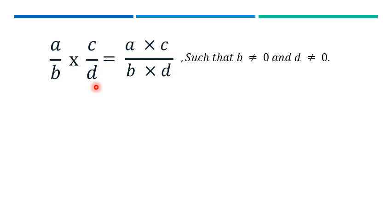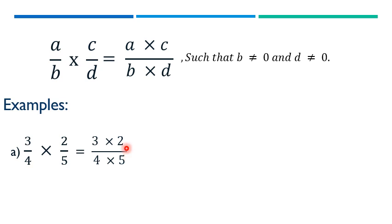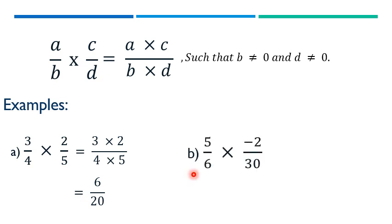This rule applies to products of three, four, or more fractions — we directly multiply all numerators together and all denominators together. Example: 3 over 4 times 2 over 5 gives us 3 times 2 over 4 times 5, which equals 6 over 20.